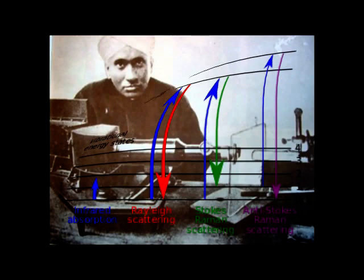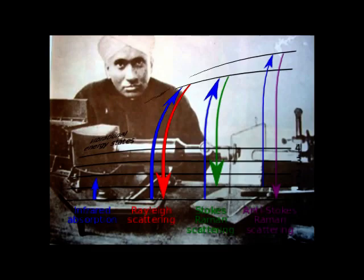The Raman effect was named after one of its discoverers, the Indian scientist Sir C.V. Raman, who observed the effect by means of sunlight together with K.S. Krishnan, and independently by Gregory Landsberg and Leonid Mandristam. Raman won the Nobel Prize in Physics in 1930 for this discovery, accomplished using sunlight, a narrow band photographic filter to create monochromatic light, and a cross filter to block this monochromatic light. He found that a small amount of light had changed frequency and passed through the cross filter.